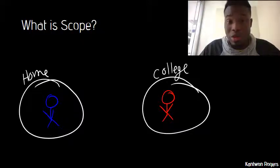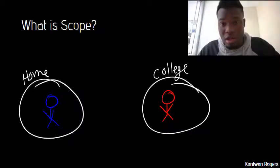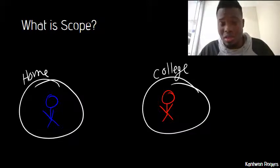If I'm at home and someone is referencing Jason, that's one particular person. If I'm at college and someone is referencing Jason, I'm not going to be thinking about the Jason that's at home. I'm going to be thinking about the Jason that's in college.